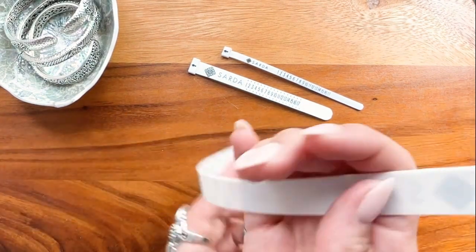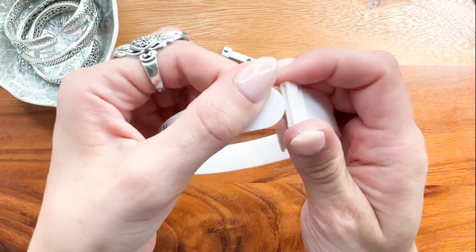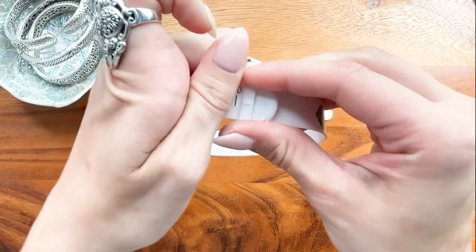Let's start with bracelet size. Take the bracelet sizer, insert the tab through the loop, and pull.